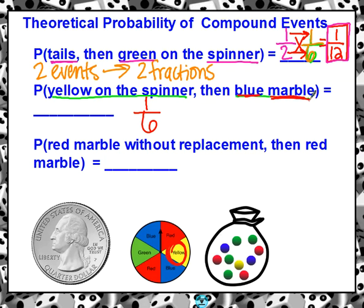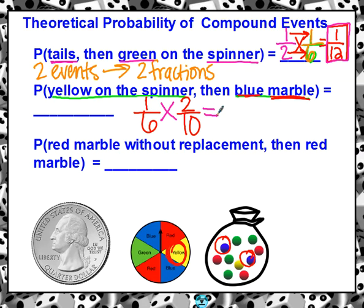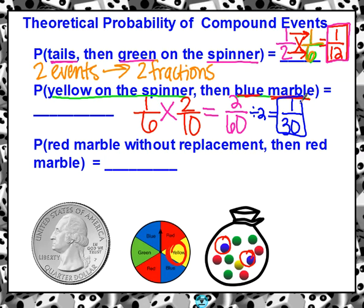Then a blue marble. If we look at our bag of marbles, two of them are blue out of ten. So one out of six is our first event, two out of ten is our second event. We multiply the fractions: top times top, which is two, and bottom times bottom, which is 60. So two out of 60 — we can simplify that. I can divide both by two: two divided by two is one, and 60 divided by two is 30. So our probability of yellow on the spinner then a blue marble would be one out of 30. That's definitely not super likely — the first answer was one twelfth, which is more likely than one thirtieth.